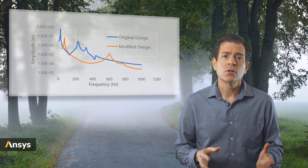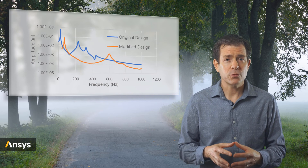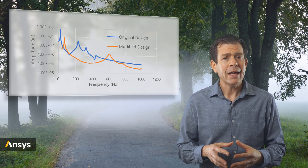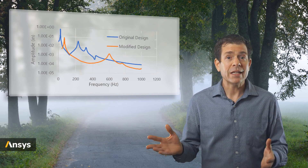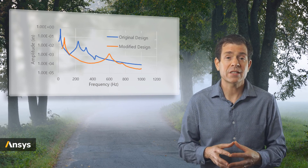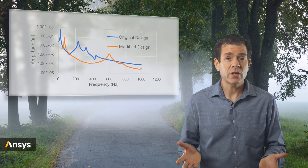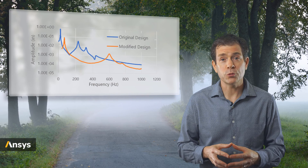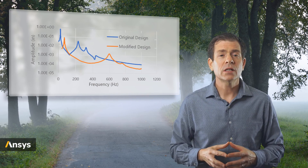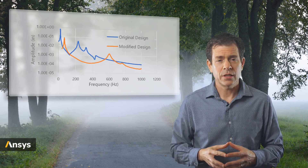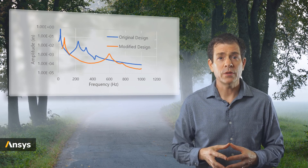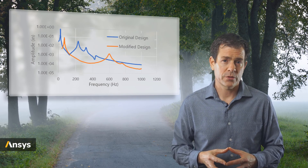Our blades will likely pass through 50 Hz, which is 3,000 RPM, quickly and may never even get to such a high speed at 600 Hz or 36,000 RPM. So potentially this is an improved design. The frequency response plot gives a clear indication that we should not expect any resonance between 50 and 600 Hz. Compared to the original design, this is a large improvement in the dynamic characteristics of the design.